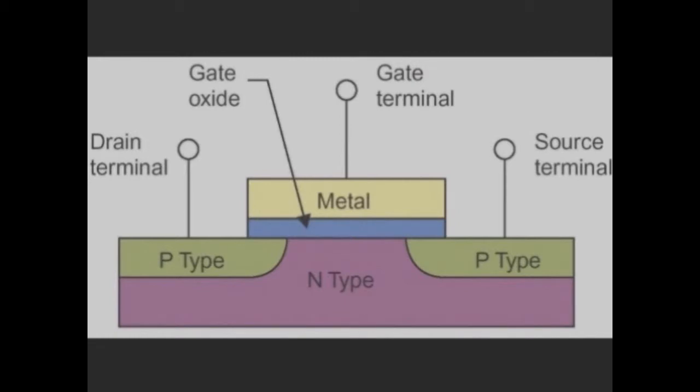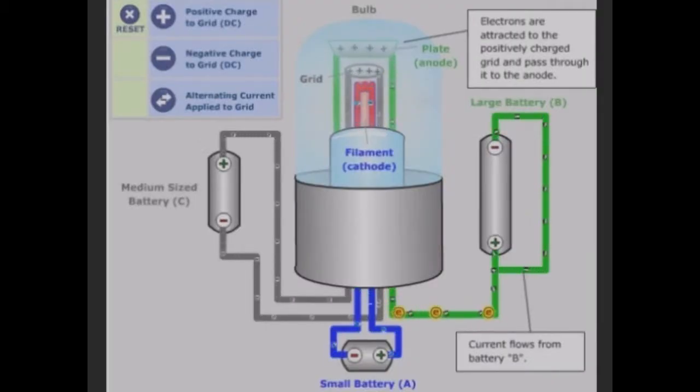But in this presentation, we're gonna focus on tubes. There are two main parts to a vacuum tube, the anode and the cathode.